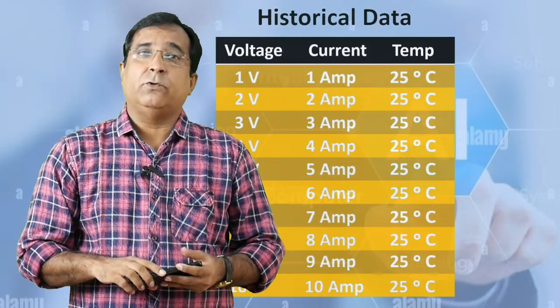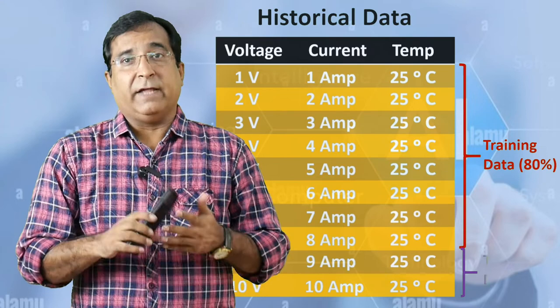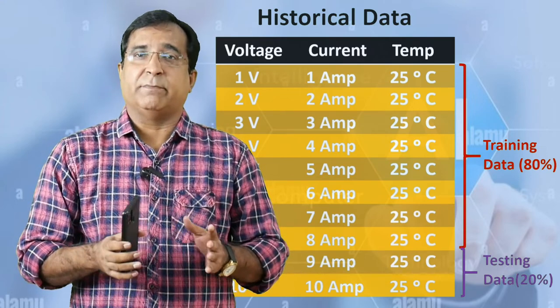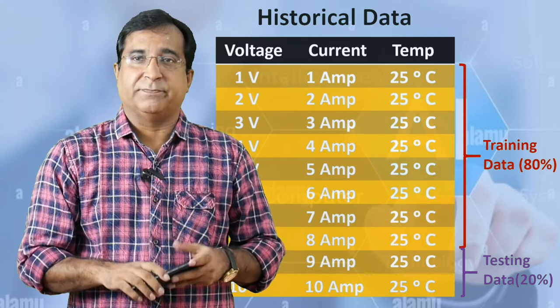Now the question arises how would I know what relation the AI model has drawn between inputs and outputs is 100% accurate. So what I will do I will split the data set into two parts and I will feed only 80% of historical data to AI model for training purpose and rest 20% data I will keep it with me for testing purpose.